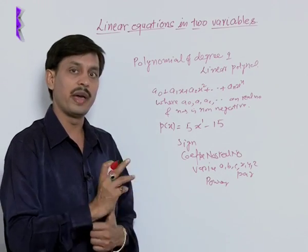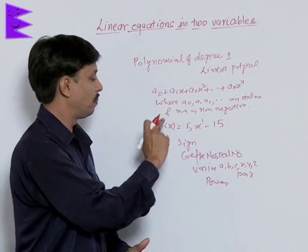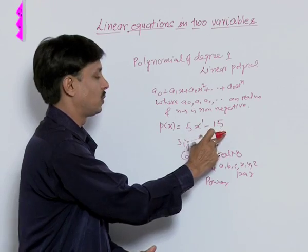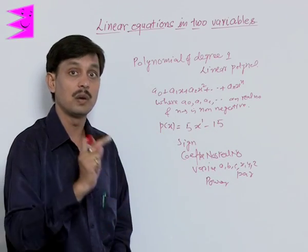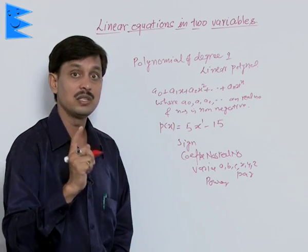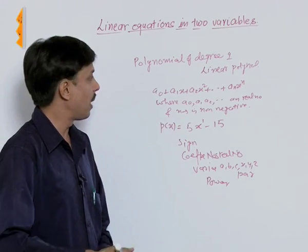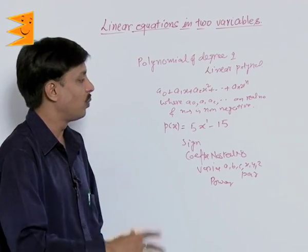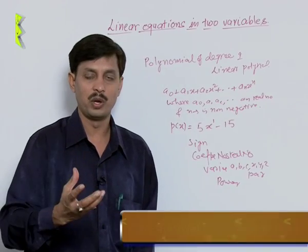So my purpose is to explain you that P(x) = 5x minus 15 is a linear polynomial. Why it is linear? Because its degree is 1.